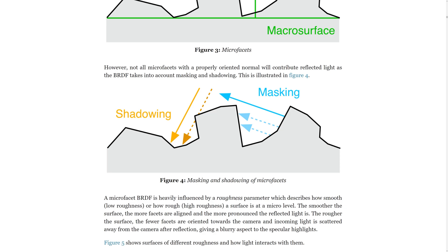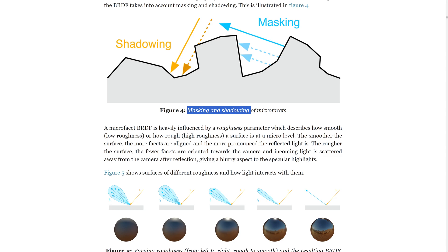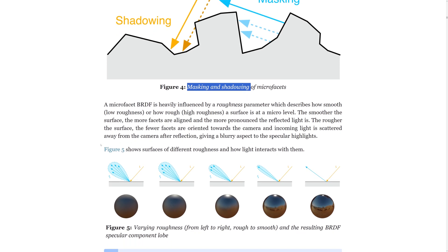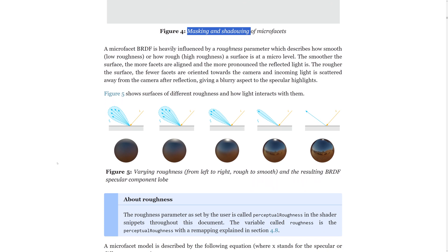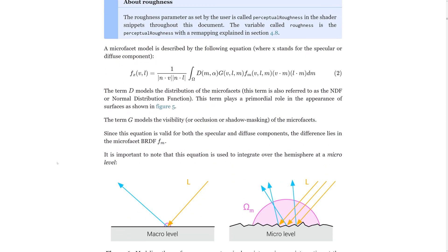Sometimes the micro details block light that is falling onto or reflecting from the neighboring area. This is called the shadowing and masking term of the BRDF also known as the geometric or visibility term. As you can see the more microfacet normals are aligned with the surface normal the smoother the surface is and the narrower the specular reflection will be.